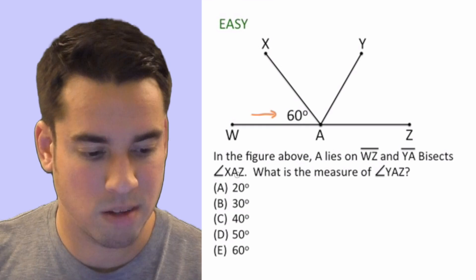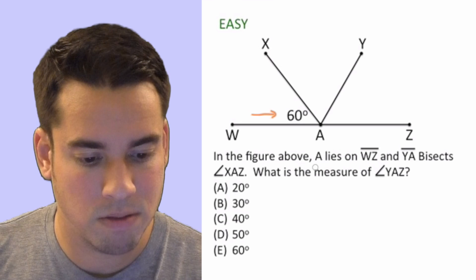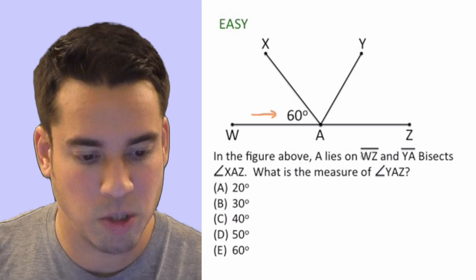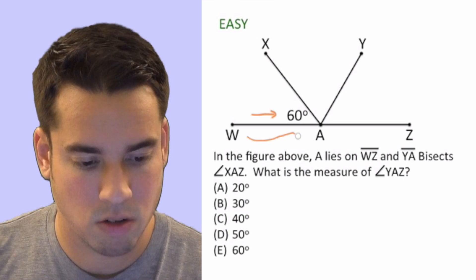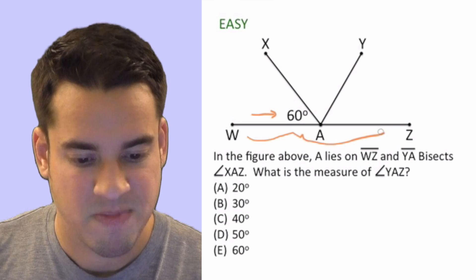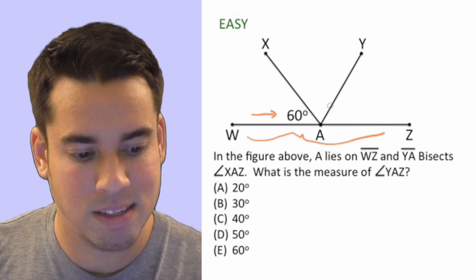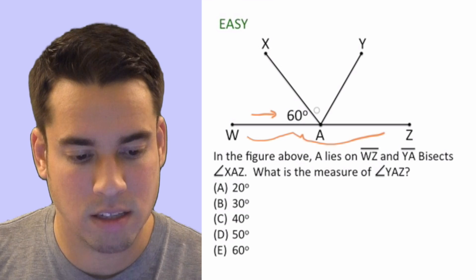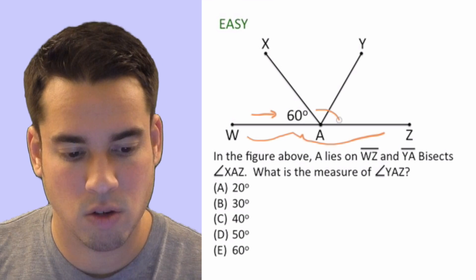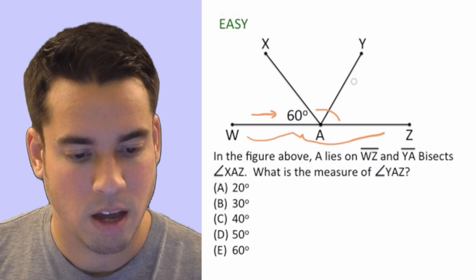Okay, let's read the question prompt. It says in the figure above, A lies on WZ, that's this line segment over here, and YA bisects XAZ. So XAZ is this angle right here.